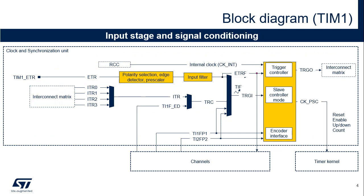The clock and synchronization unit provides the reference clock to the timer kernel, called CKPSC. The counter clock can be provided by the following clock sources: the internal clock, or CKINT; external clock mode 1, external input pin, counting each rising or falling edge on a selected input, or internal triggers; external clock mode 2, external trigger input ETR, or triggers; and encoder mode, based on TI1FP1 and TI1FP2, coming from the channels.